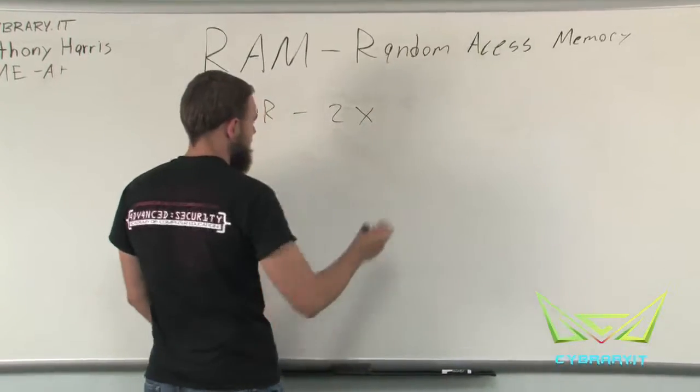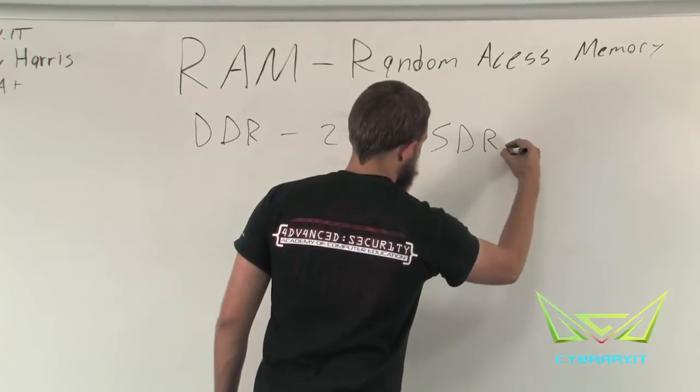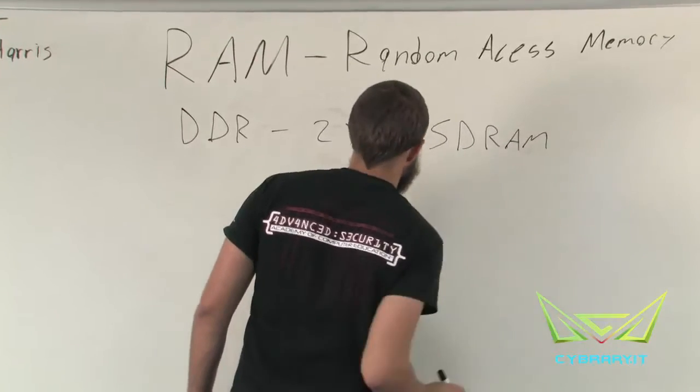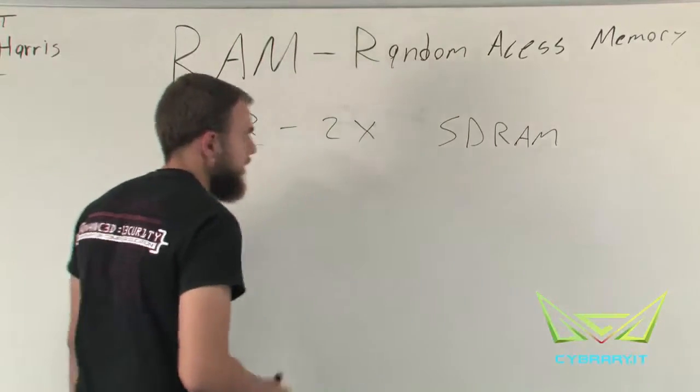DDR is double data rate. So, DDR would be twice the speed of SDRAM. Again, because DDR stands for double the data rate.